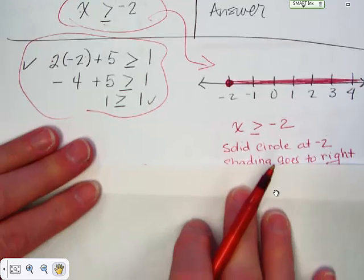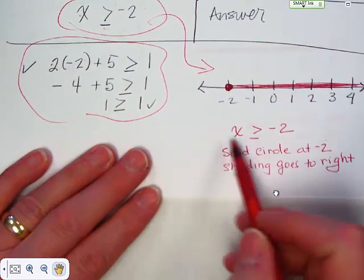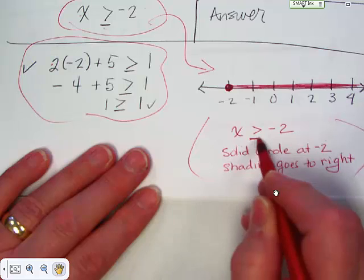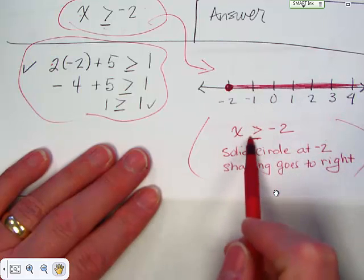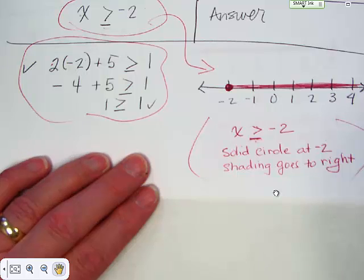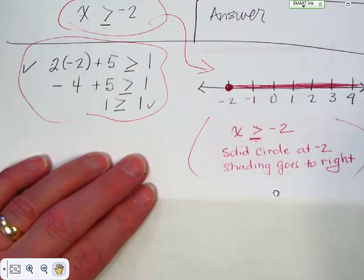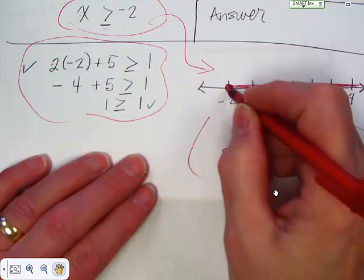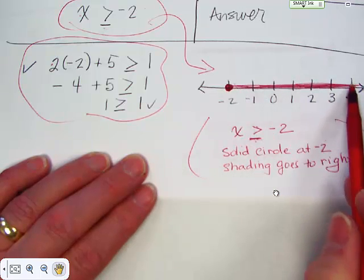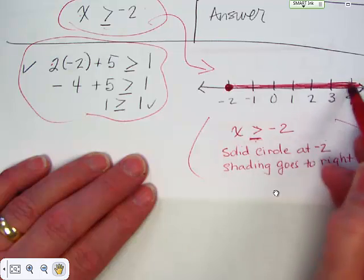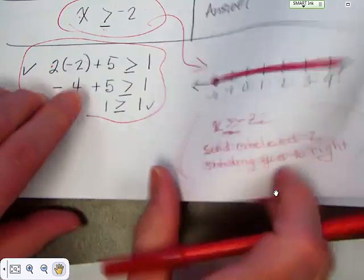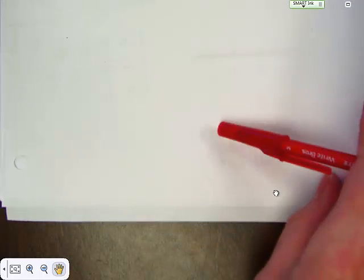Now you're graphing x greater than or equal to negative 2. Remember, if it has the little line under the inequality sign, that means greater than or equal to — that line means 'or equal to.' This tells you that the circle on negative 2 must be solid — it is a closed circle. Then you would shade to the right. You must shade so that we can tell that you're shading; simply drawing a line to the right will not do it.